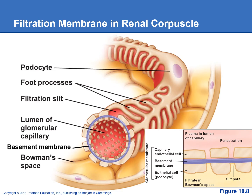This shows the filtration membrane in the renal corpuscle. The glomerular capillary wall has big fenestrations or holes, allowing the capillaries to filter out a lot more fluid than other capillaries in the body. The basement membrane, shown in purple, prevents proteins and cells from being filtered out into the urine. Then we have the inner layer of Bowman's capsule — the podocytes — with foot processes and filtration slits between them. The podocytes can regulate the size of those filtration slits, affecting how much plasma is filtered.